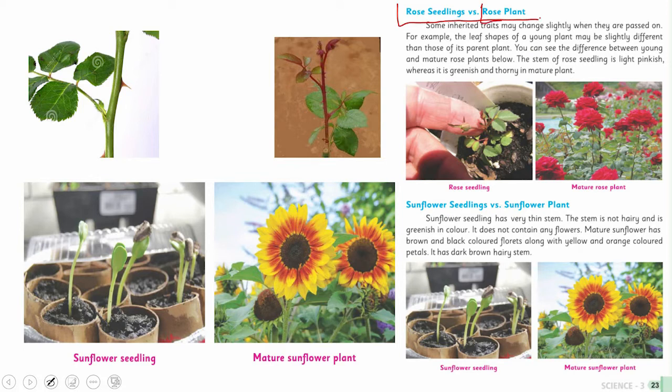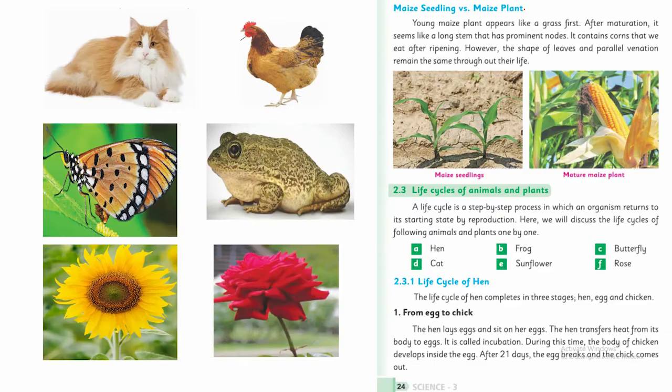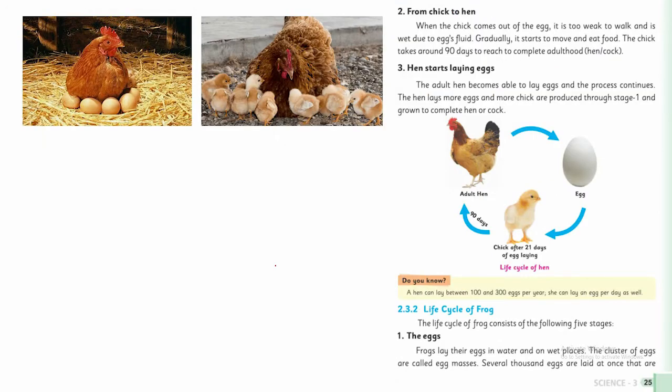We saw the same kind of resemblances in plants. Rose seedlings were somewhat similar to their rose plant. In sunflower, very few things resembled - most things were different. Then we studied maize and its seedlings compared to the maize plant. After that, we looked at some animal and plant life cycles in detail, and we learned a lot about them.